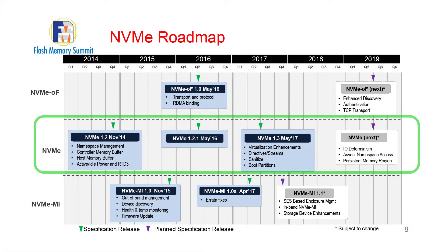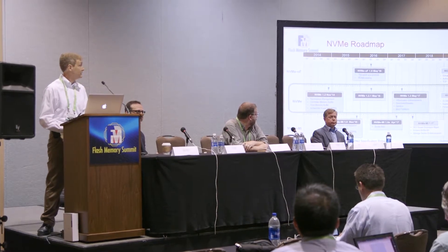We released NVMe 1.2 in November of 2014. We released 1.2.1 in May of 2016. The goal of 1.2.1 was to roll in a bunch of errata changes and to align the base spec with some of the work going on in fabrics. NVMe 1.3, which was ratified in May of this year, is really the first major spec in about three years — a major release for us. The NVMe 1.3 spec consists of over 20 technical proposals, so there's a lot of detail and I'm just going to give you the highlights of new features.